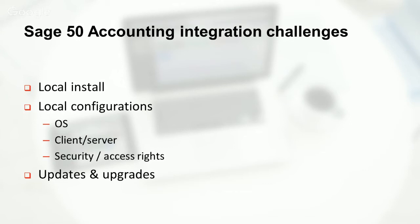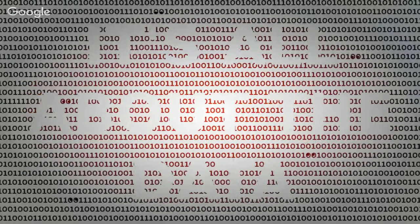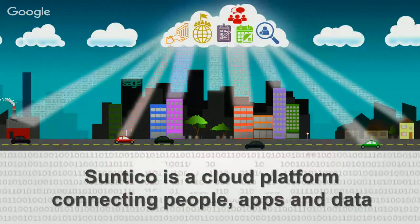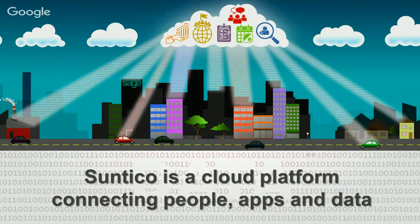So talking about those challenges, I want to introduce Suntico and how Suntico can help you address and overcome them and tap into that very large market opportunity. What is Suntico? Suntico is all about the data — helping customers who use Sage 50 and other popular on-premises accounting software products to get the best out of the data they have on their servers. Suntico is a cloud platform that connects people, apps, and data together. We look after a local connector service which runs locally against Sage 50 accounting software and synchronizes that data up into a cloud database where it can be accessed and used by other people, apps, and services.